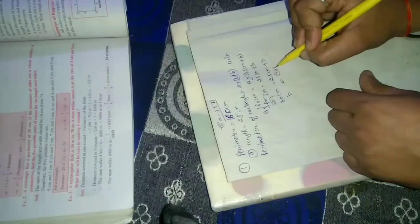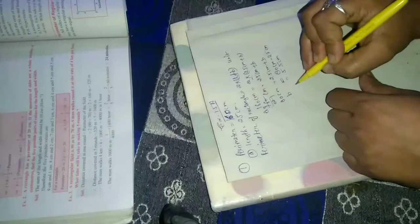160 equals 2 times 25 cm plus breadth. 80 cm equals 25 cm plus breadth. Breadth equals 80 minus 25, equals 55 cm. Breadth is 55 cm.